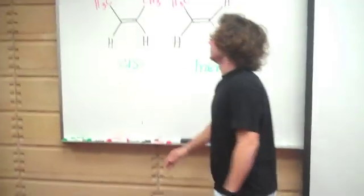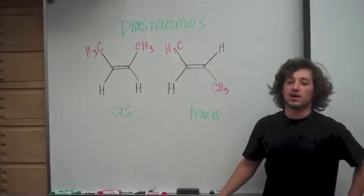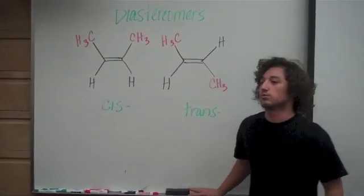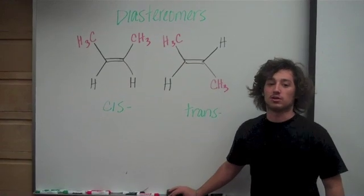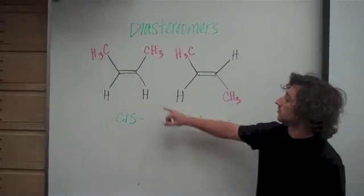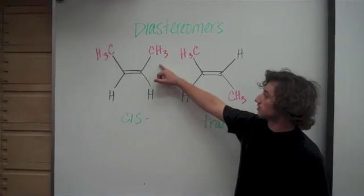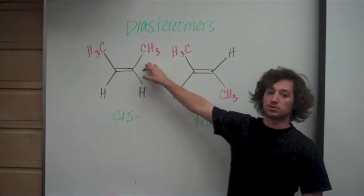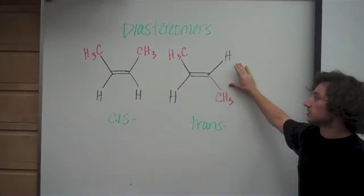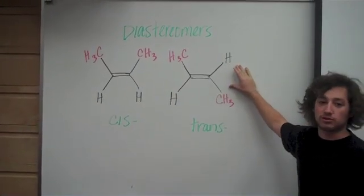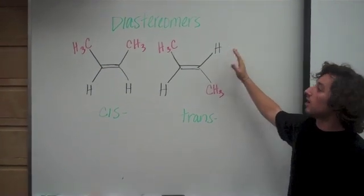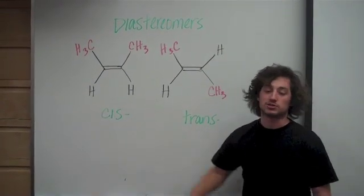On the other side, we've got diastereomers. The best example of diastereomers are cis and trans examples, where in the cis example the two R groups are on the same side of the bond, and in the trans example the two R groups are on opposite sides of the double bond. They're not mirror images, and they're not superimposable on each other.